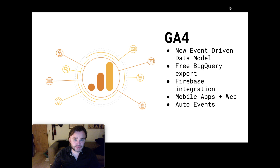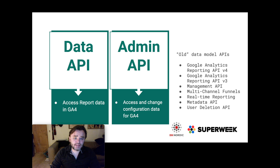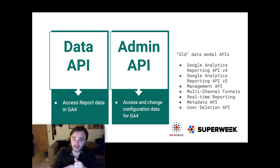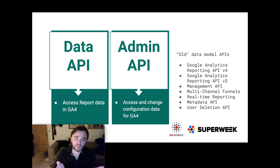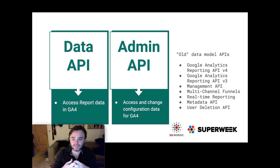That's a brief overview of GA4 - presumably you know GA4 if you're watching this. We've got two APIs: the data API, which accesses all the report data in GA4, and the admin API, which handles all the configuration data. Just to note: the Google Analytics Reporting API v4 was actually for Universal Analytics, so they couldn't call the new API Reporting API v5. That would be ridiculous, so they've gone with Data API instead.